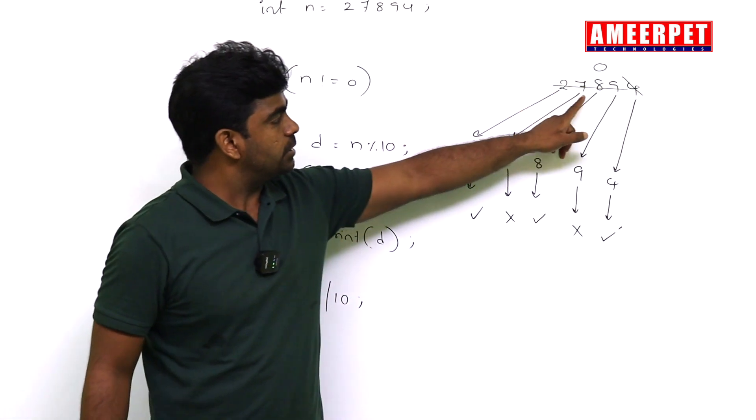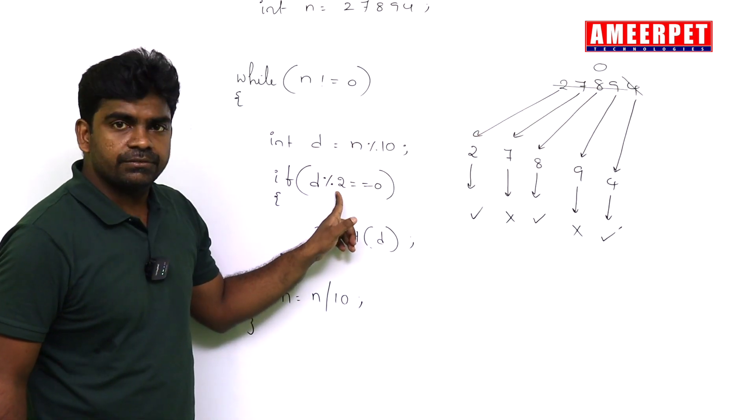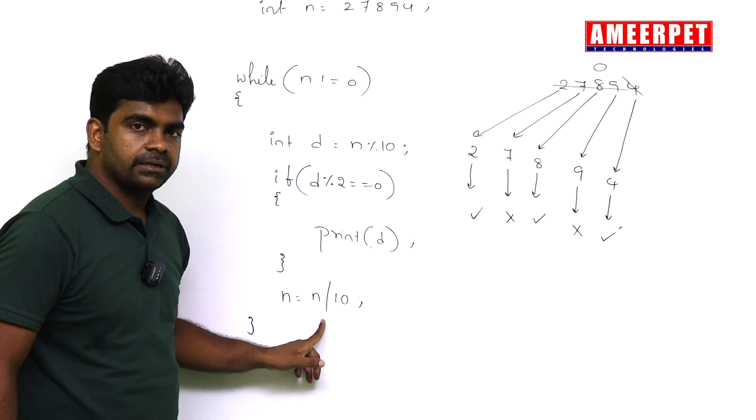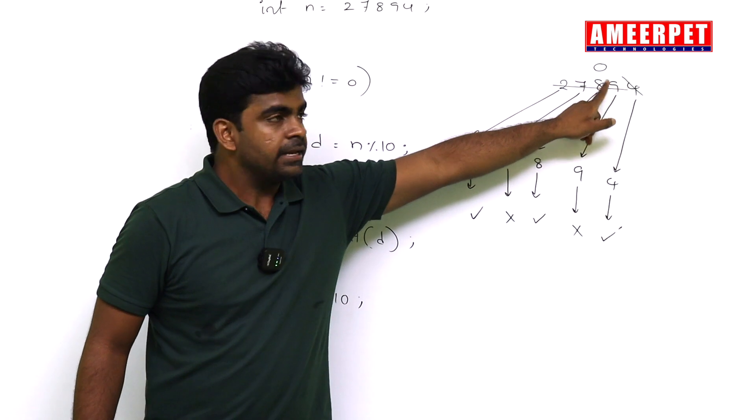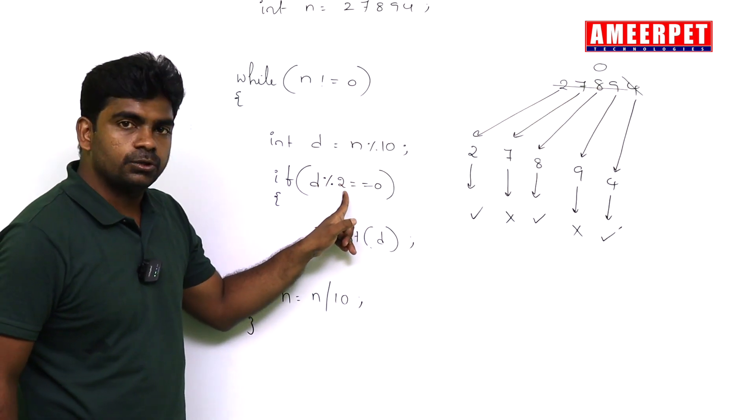Again the loop will repeat. Next, 9 will come. That 9 is not divisible by 2, so will not print. Come to here, 9 will be removed. Next digit is 8. Yes, 8 is divisible by 2.